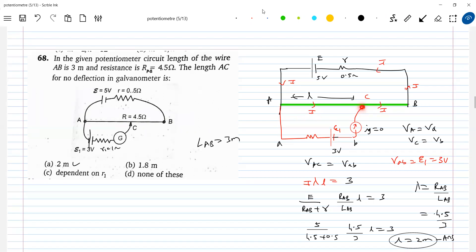If you make length more than, if point C, if the length is equal to 2.5 meter, suppose if the jockey is here, then the current will flow like this. So when the jockey is on either side of the balancing point, how does it flow?